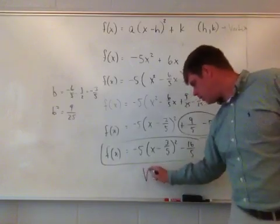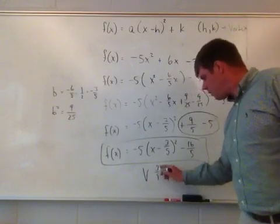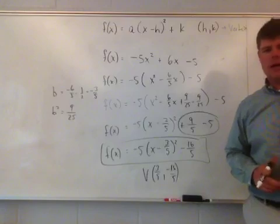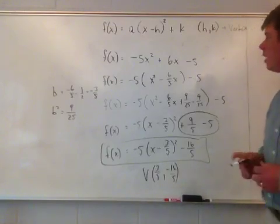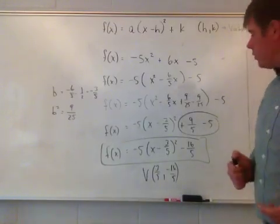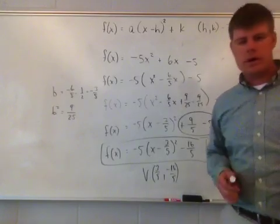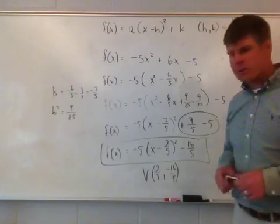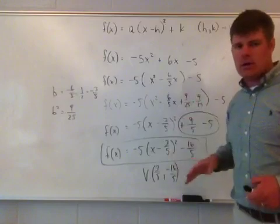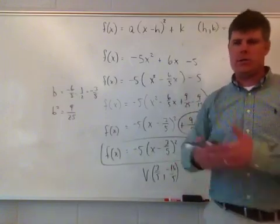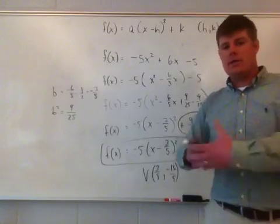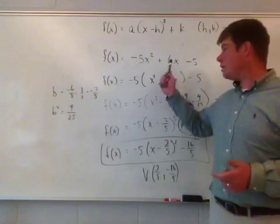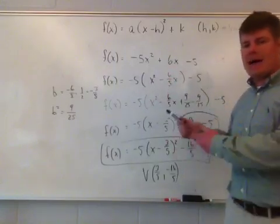The vertex for this quadratic function is (3 fifths, negative 16 over 5). I've taken the function from standard form and used completing the square to convert it to vertex form. The most important step is adding 0 — using the additive identity property, which states that adding 0 to something won't change its value. That allows us to change the look of the function without changing what it equals.